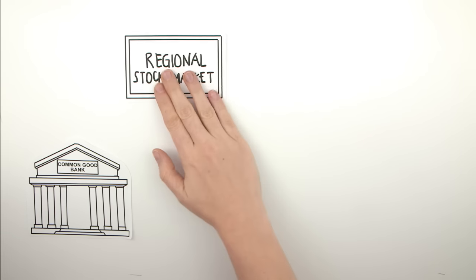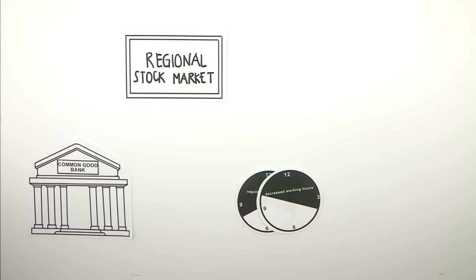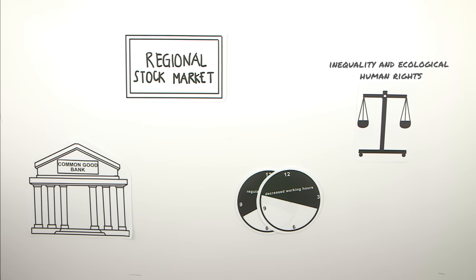With the common good balance sheet and other cornerstones like common good banks, regional stock markets, decreased working hours, limits to inequality and ecological human rights.